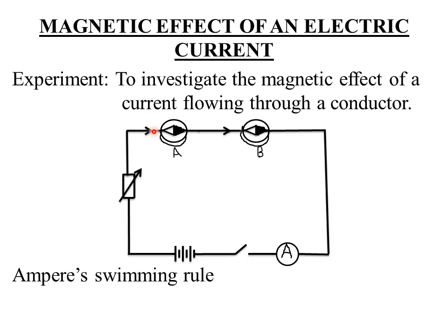So needle A will deflect downwards if the polarities are reversed. If the current was moving from this terminal and the wire was passing above needle A, the left hand will be downwards, meaning needle A deflects downwards. Then needle B will deflect in the opposite direction — needle B will deflect upwards.